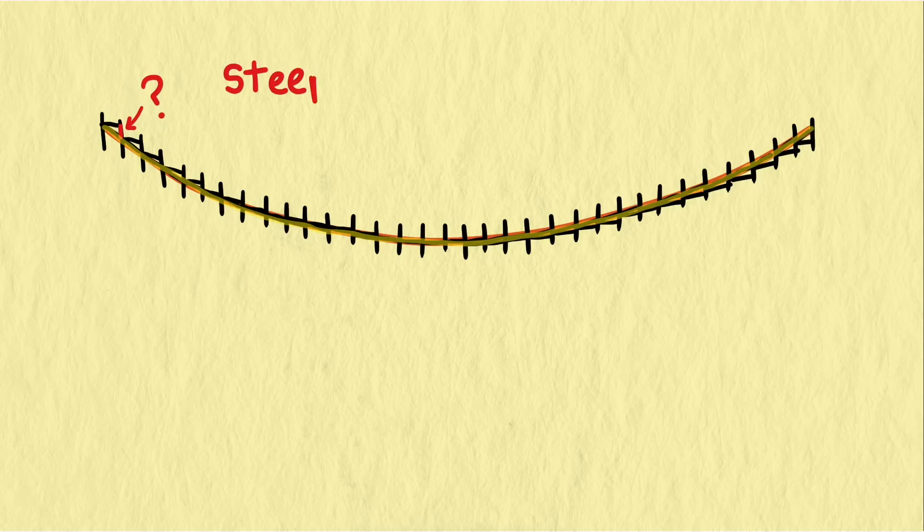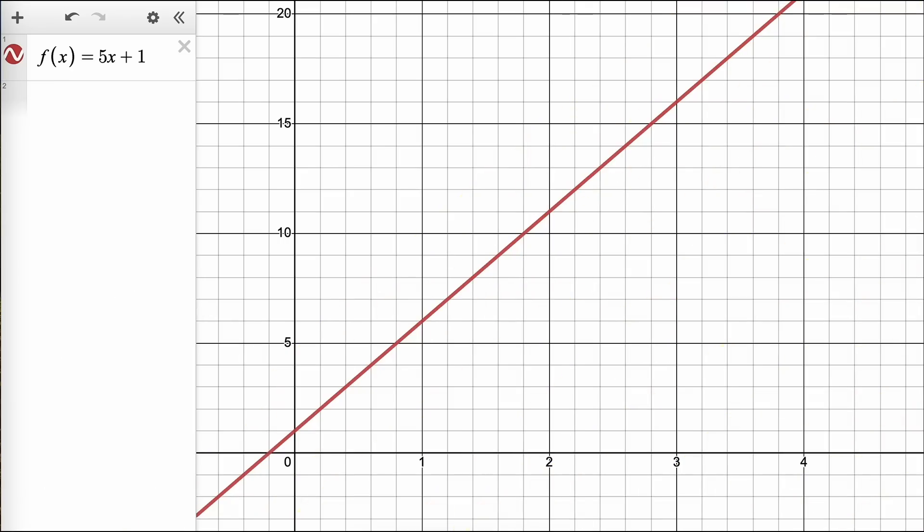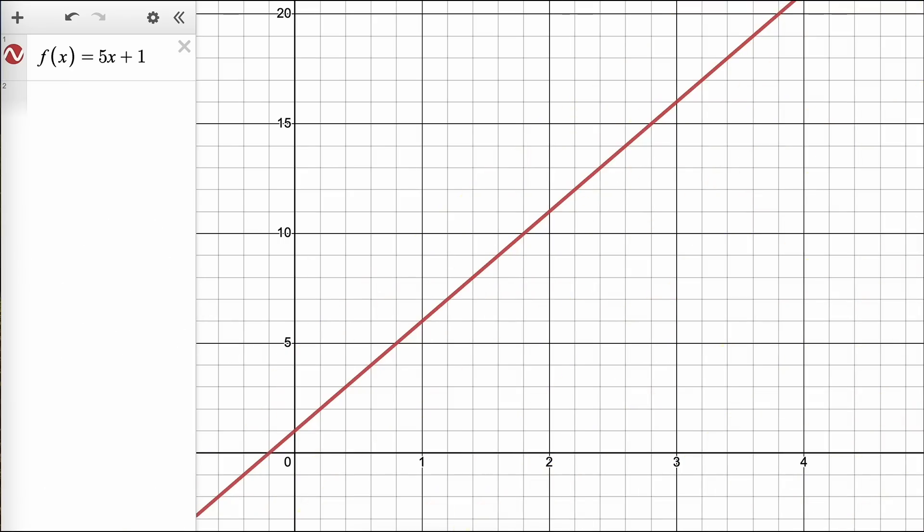Well, we can use what we know about the steepness of a line. We often measure the steepness of the line by the slope of the line. Let's take a simple case and see if we can figure out the length of the hypotenuse. Here's a line of slope 5. What's the length of this line going from here to here? This leg is 1, and this leg is 5.